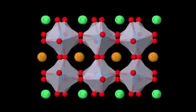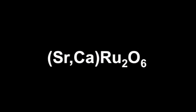What you see here is a theoretical chemical model of a material that we've created at Drexel. It's called strontium calcium ruthenate, with chemical formula SrCaRu2O6.